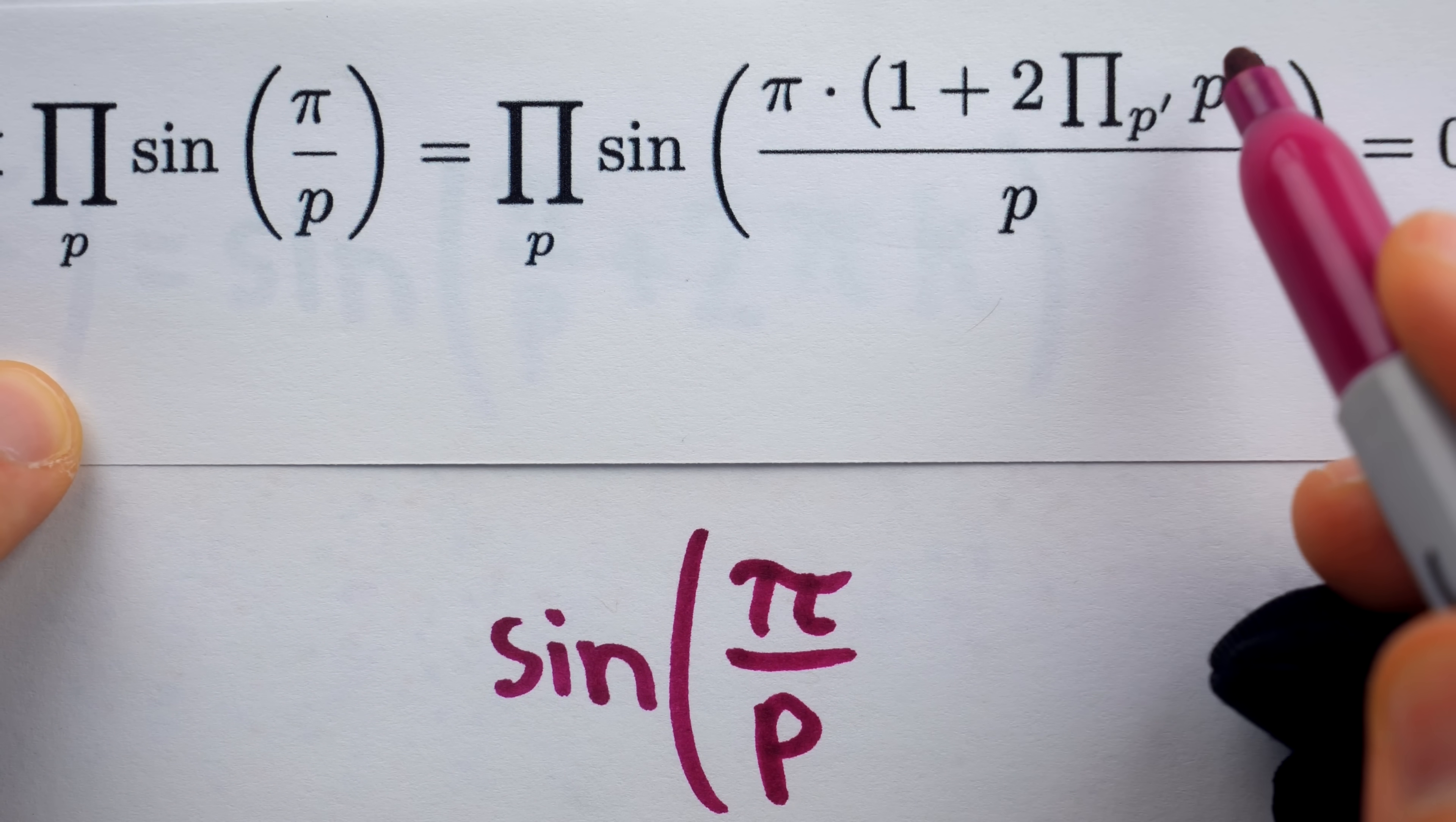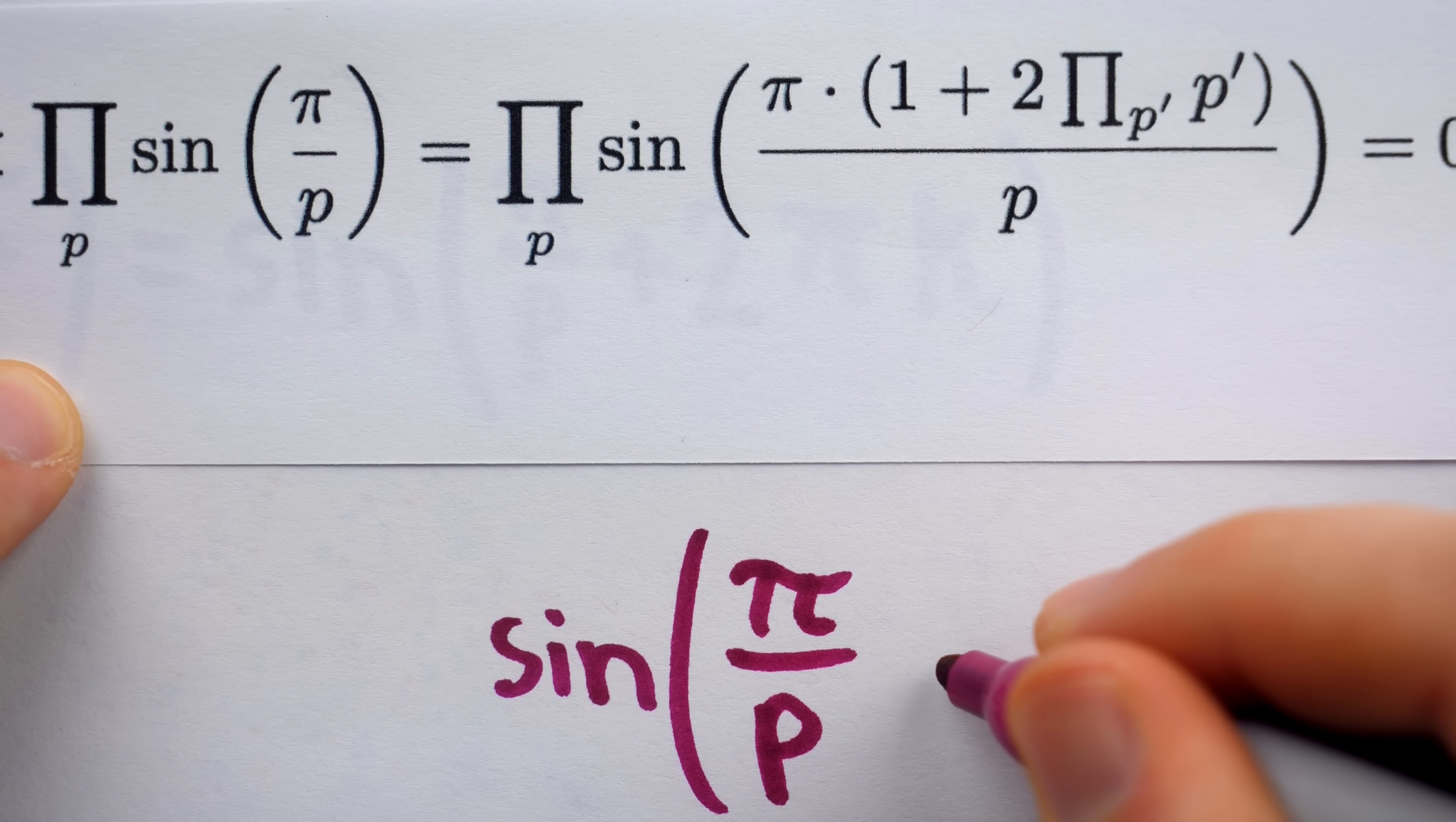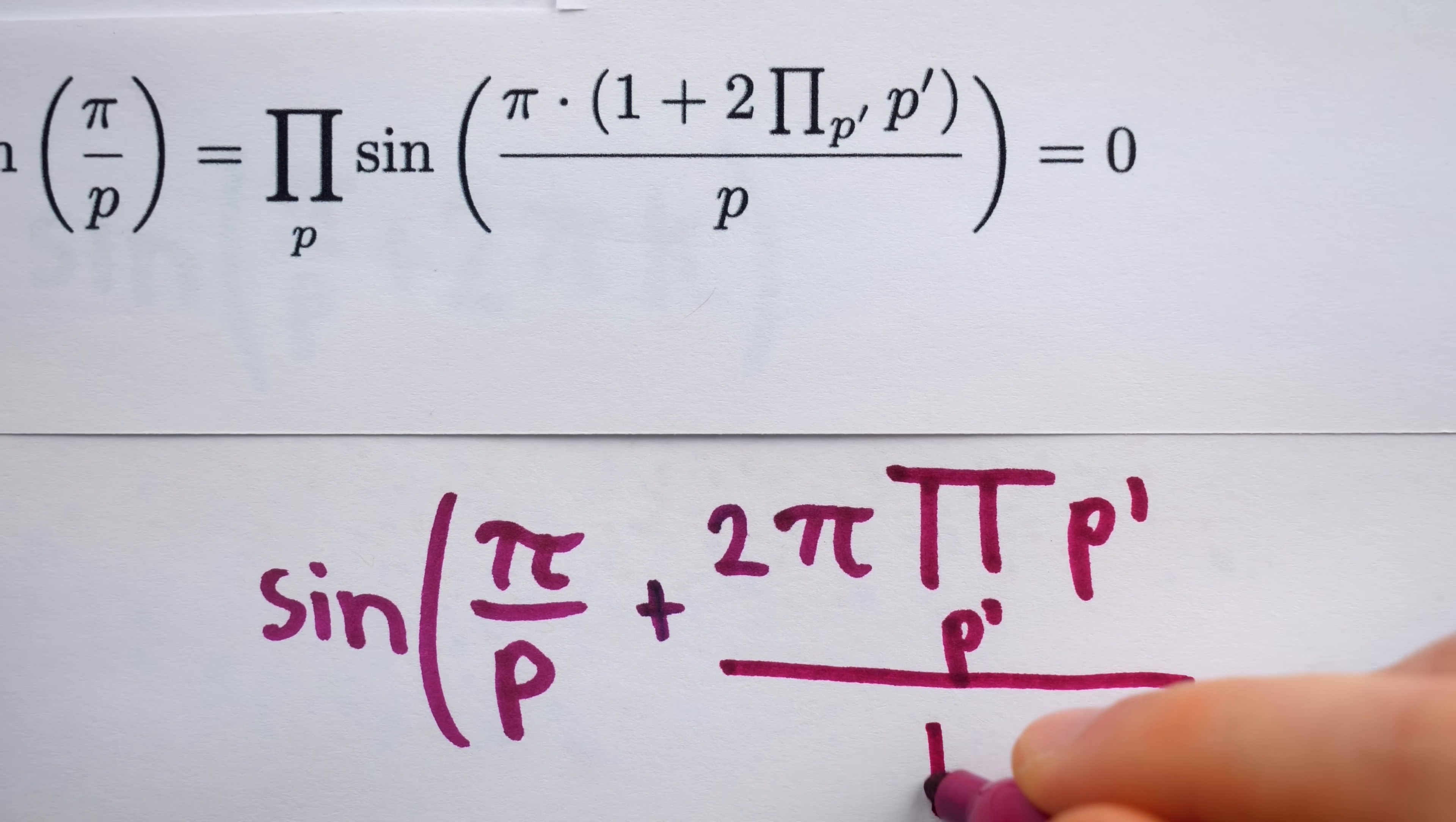And then plus this over p times pi. So we'll write that as plus 2 pi times this product of all the prime numbers all over p.